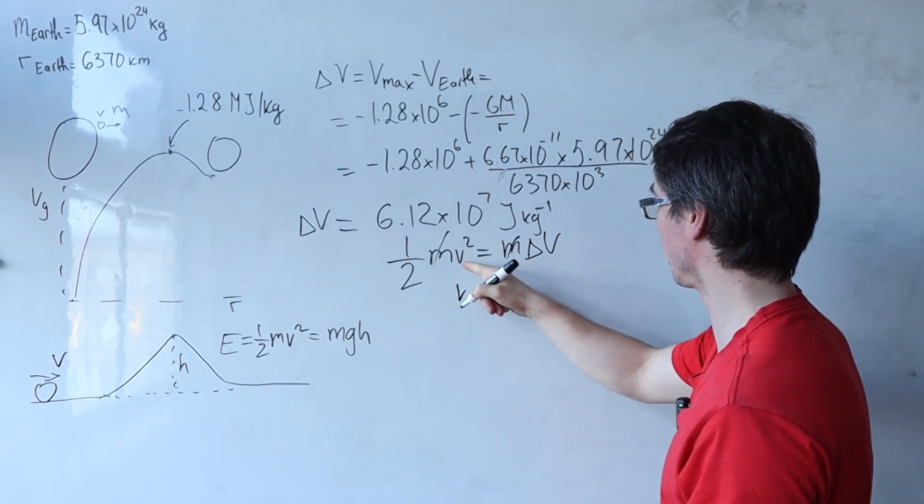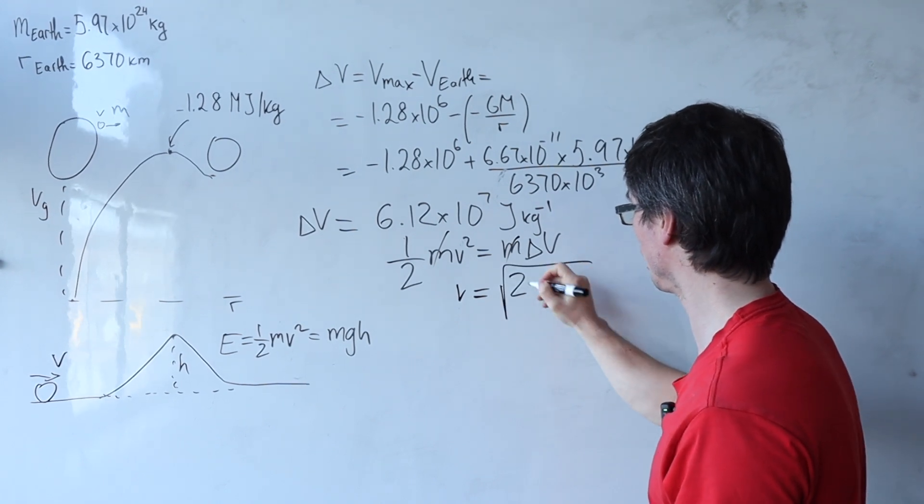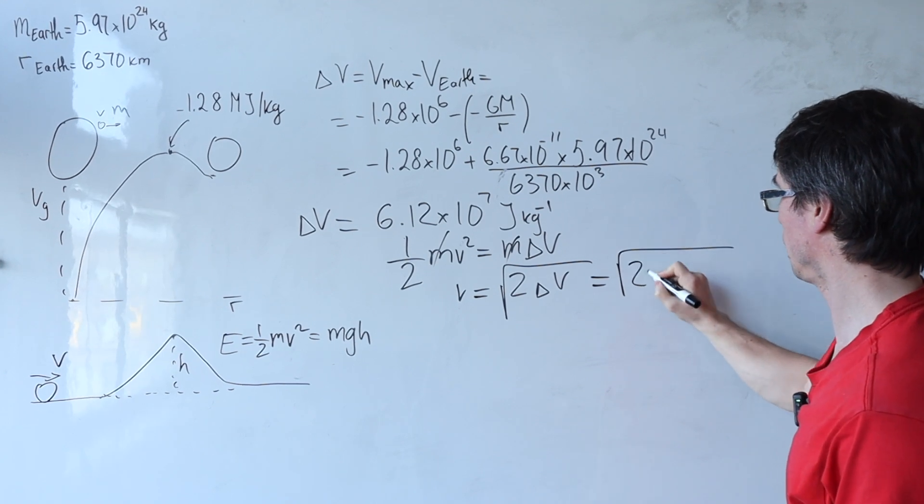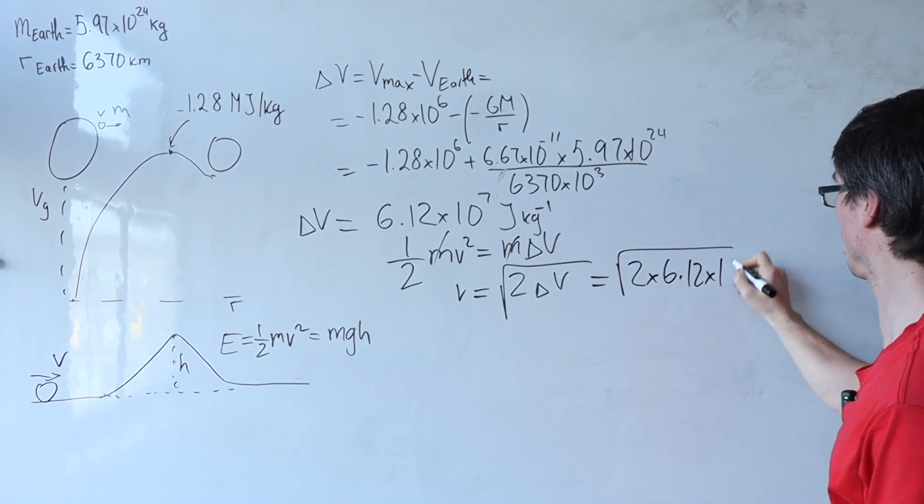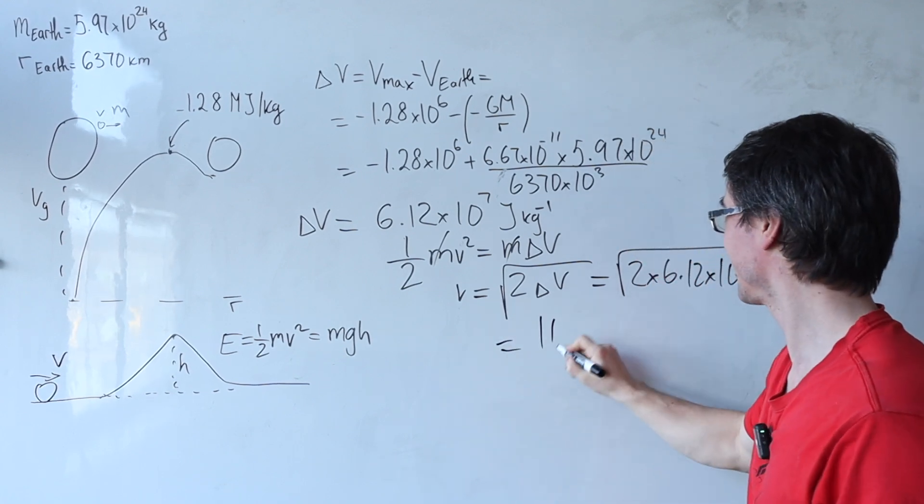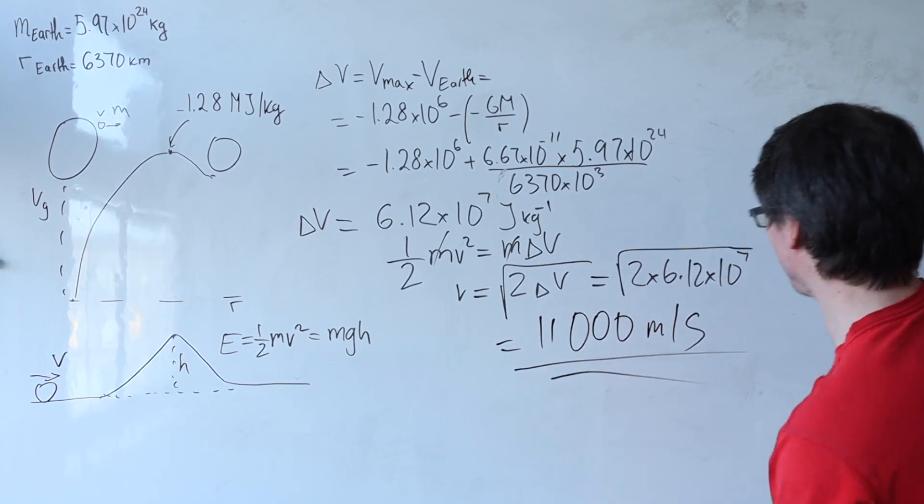What we're going to get is that v is going to be equal to the square root of 2 delta v, which is equal to 2 times 6.12 times 10 to the power of 7. And up to two significant figures, this is equal to approximately 11,000 meters per second.